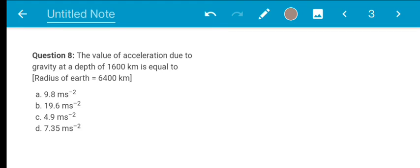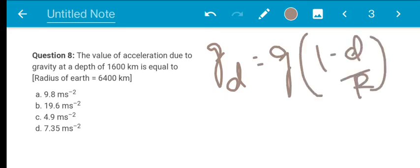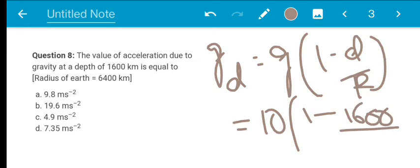Next question: the value of acceleration due to gravity at a depth of 1600 km is equal to. At depth, acceleration due to gravity formula is Gd is equal to G of 1 minus d by r. Acceleration due to gravity on the surface of Earth G. So approximately 10 of 1 minus depth is equal to 1600. Radius R equal to 6400.